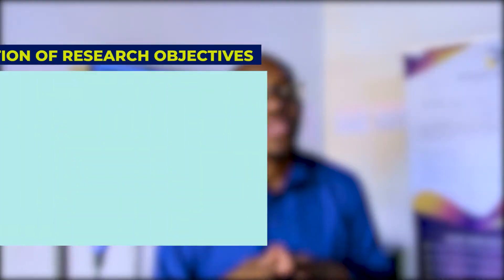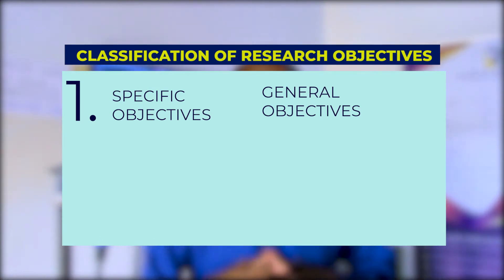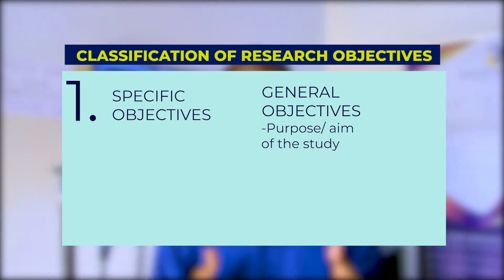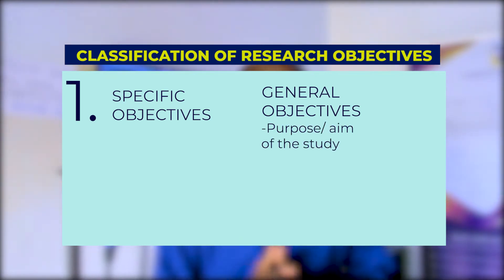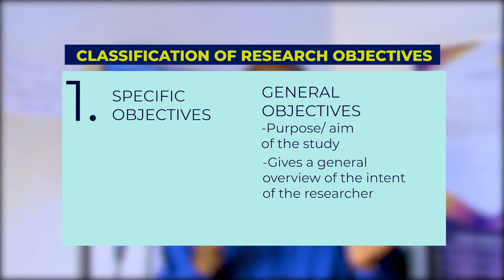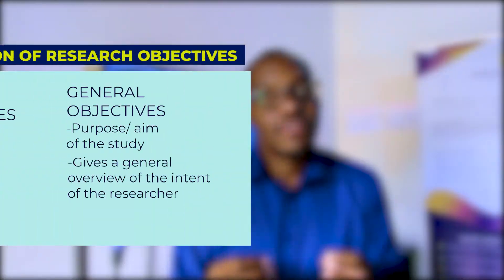There are different classifications of objectives. The most common one is general objectives and specific objectives. General objectives are also referred to as the purpose or aim of the study in some books — they give a general overview of the intent of the researcher. For example: 'to determine the association between remuneration and performance.'